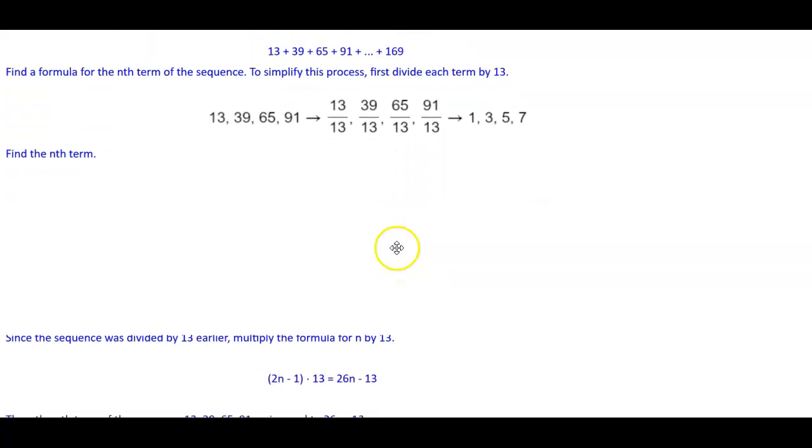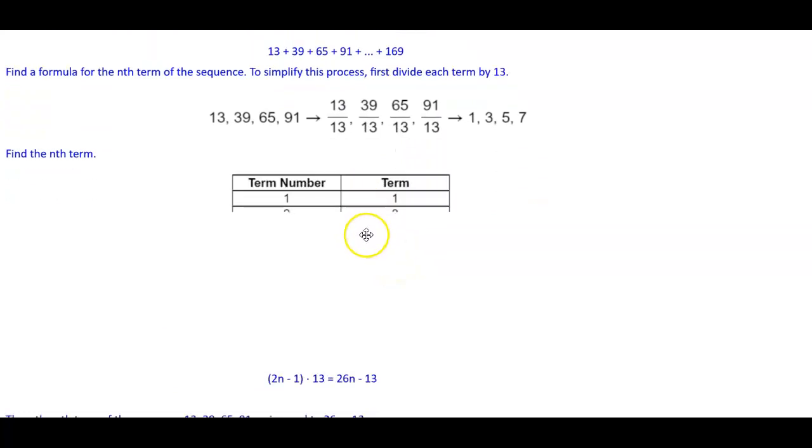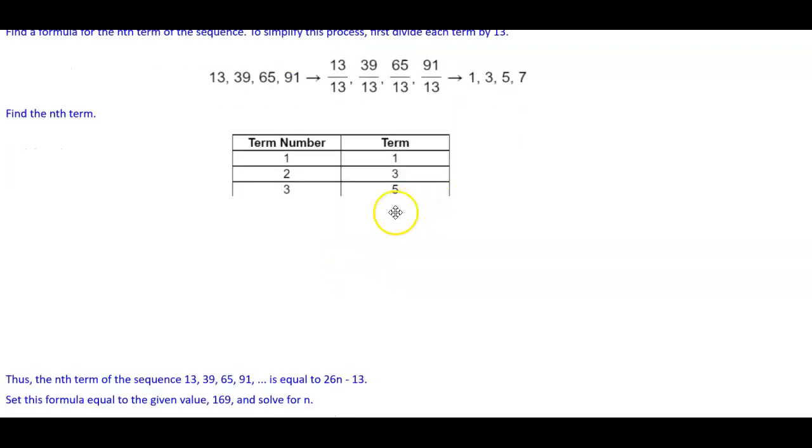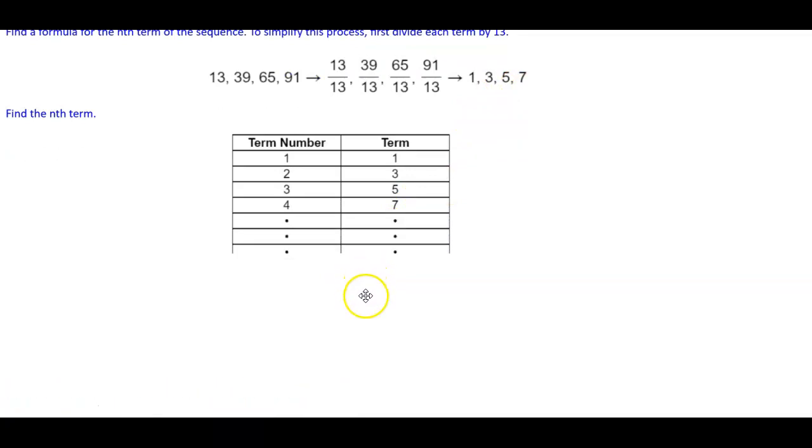Now we want to find the nth term. If you take a look, the term number for the first term is 1, the second term is 3, the third term is 5, the fourth term is 7. Therefore, the nth term is going to be 2 times n minus 1.